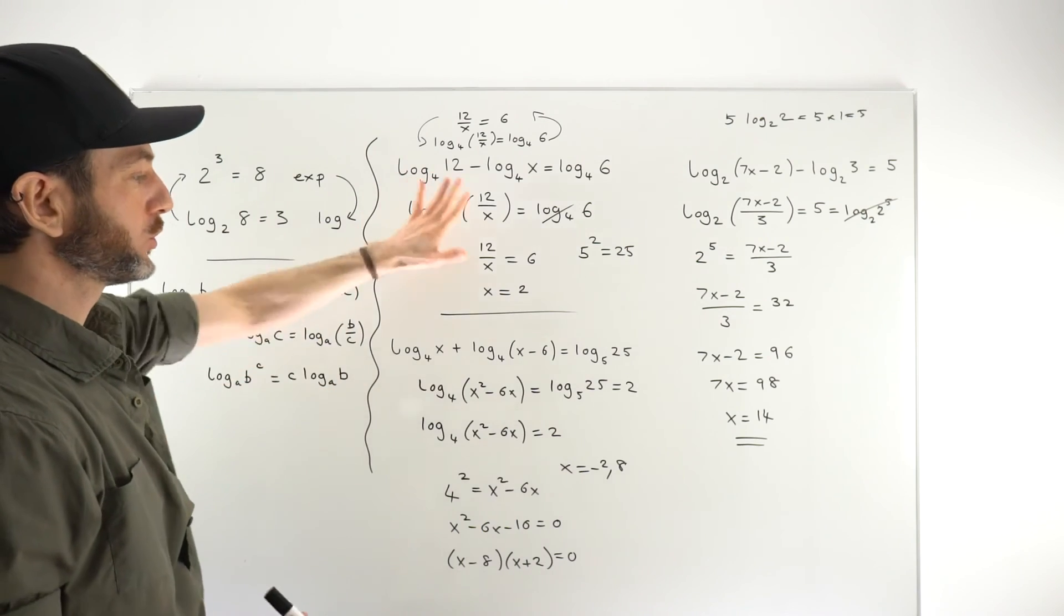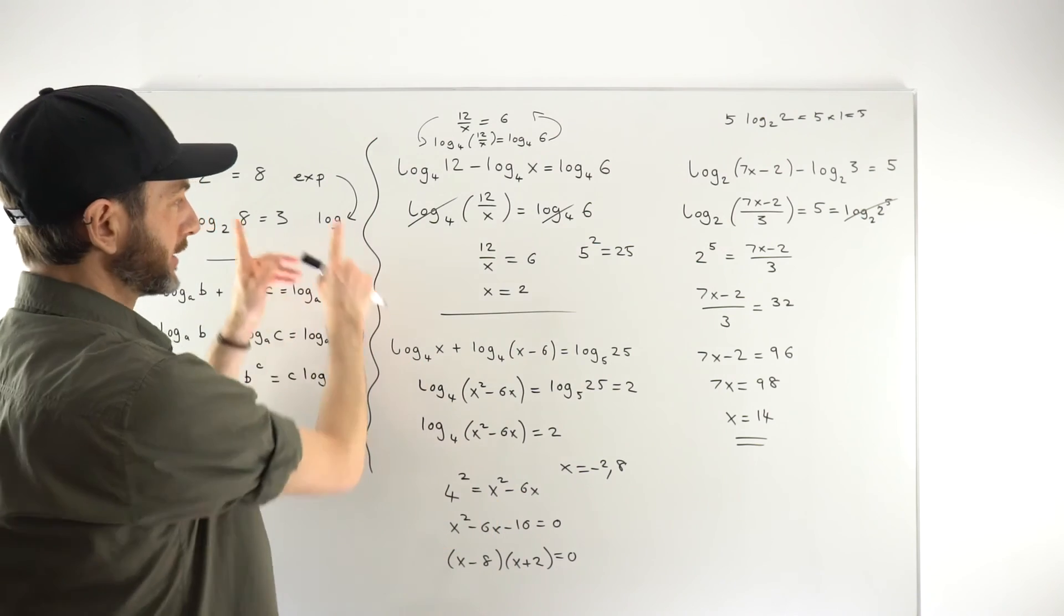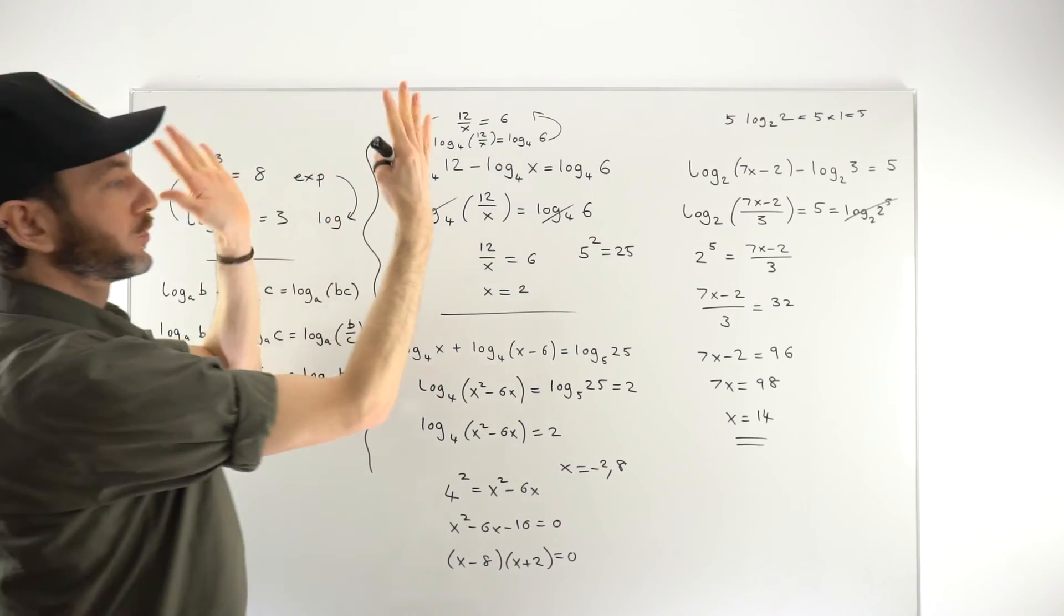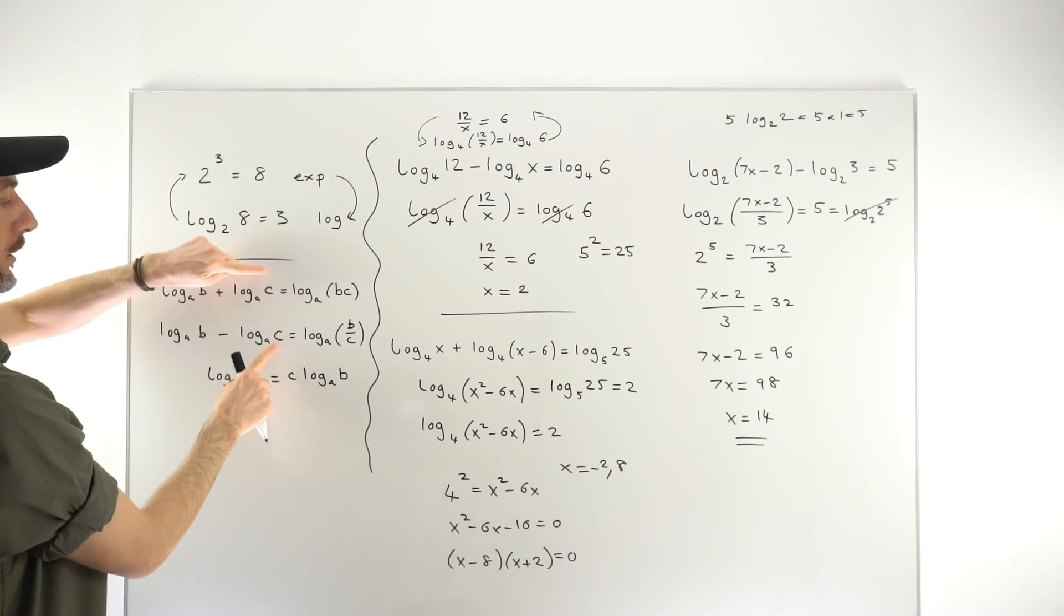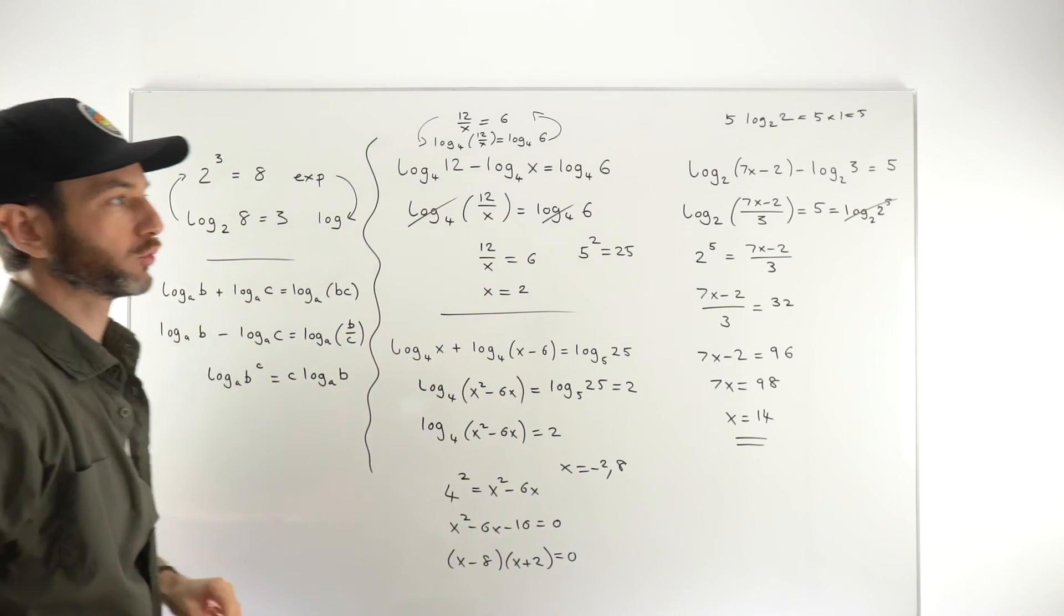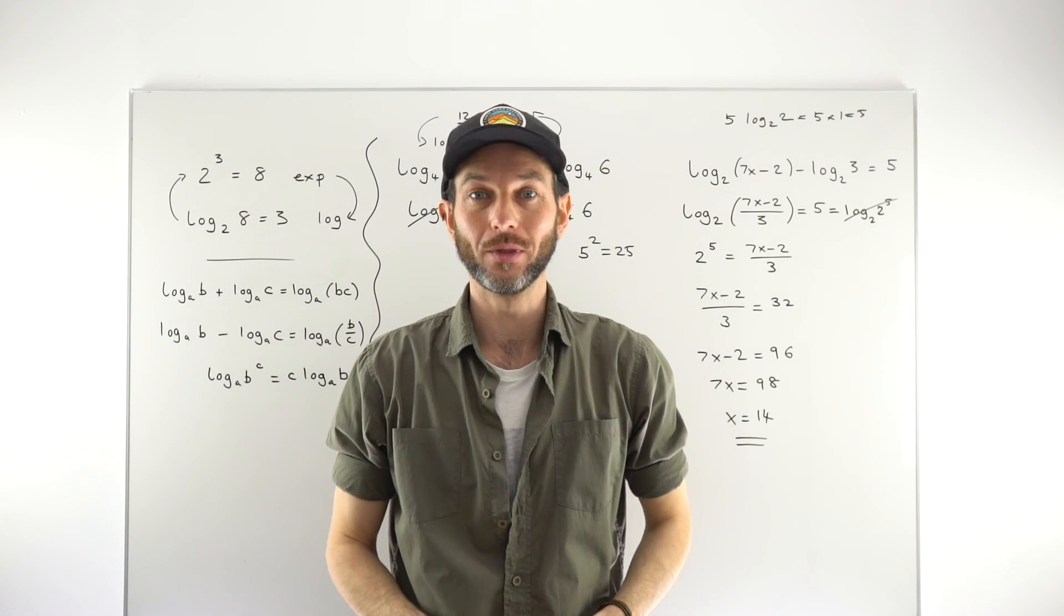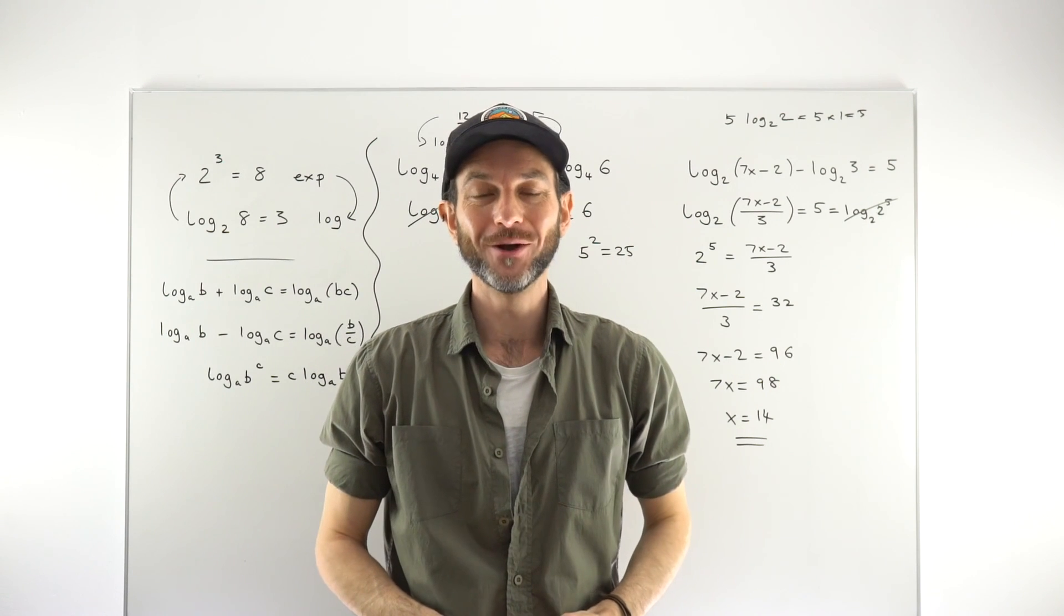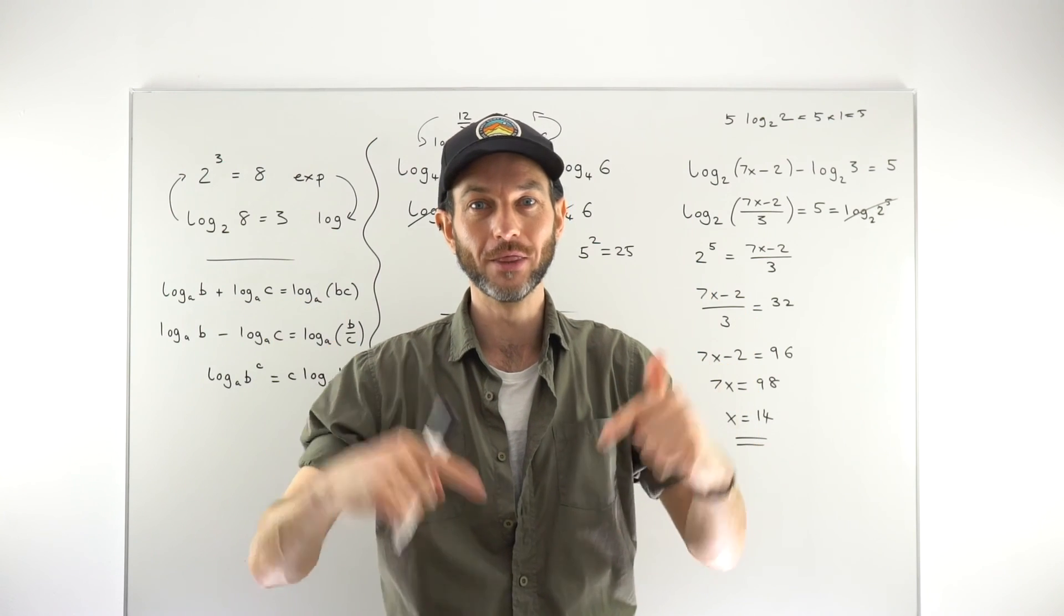So a few different approaches there. Dropping the logarithm, rearranging the logarithm into an exponential. This is probably the most common technique. But before we could do any of that in all three of these examples, we had to use these rules, particularly the first two rules. The third rule tends to be less applicable. Knowing how to combine them using the first two rules is really the key to unlocking these equations with logarithms. Actually, solving the equation part in the end should be fairly easy. So I hope that makes sense. If you've got any questions or comments, just leave them in the box below.